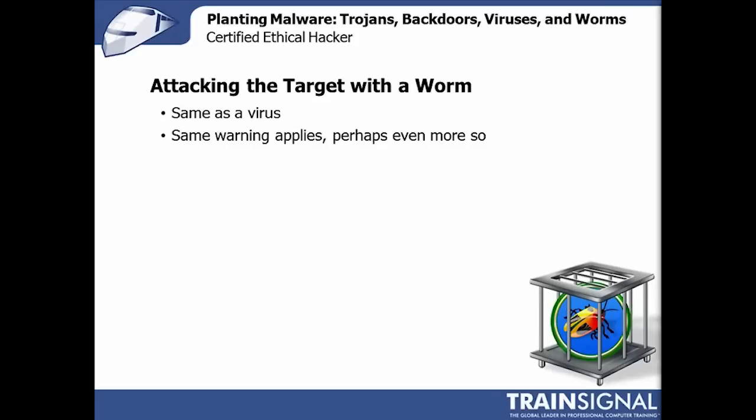There have been cases where worms got loose on the internet and spread worldwide in minutes, being exceptionally difficult to stop. By the time a network administrator sees what's going on, the worm is gone — but then it comes back, and goes away, and comes back again because of its self-replication process.